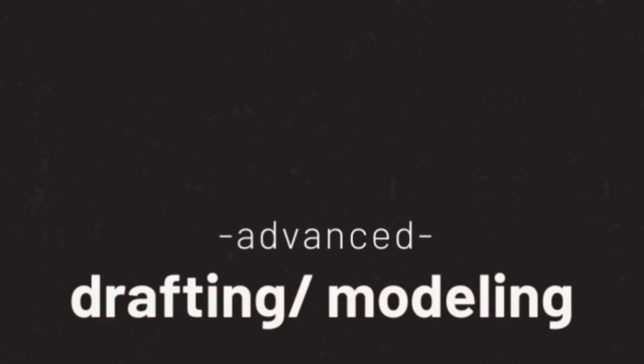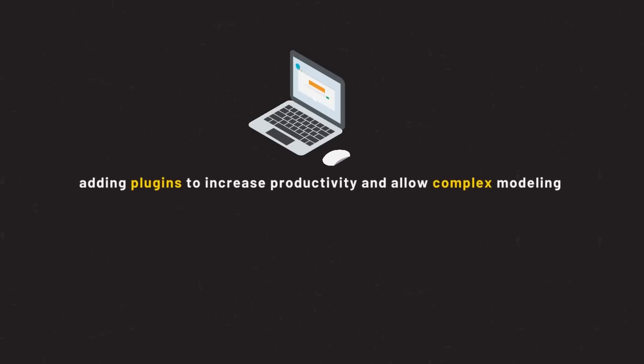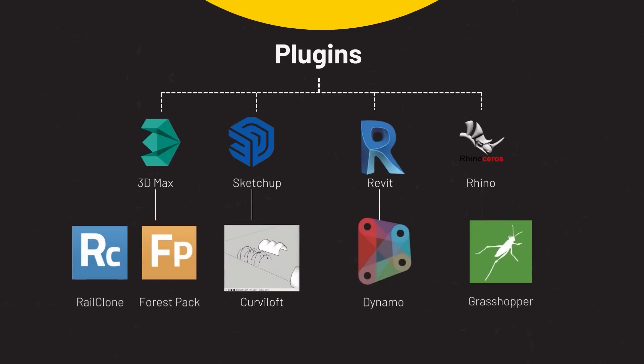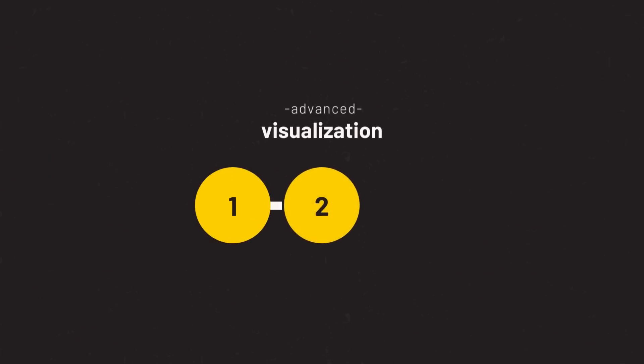Can you get better than this? Of course. For our first category, modeling, I would suggest adding plugins to make you more productive and allow you to model complex forms or model with data. Depending on your base modeling software, you'll need specific plugins — some examples are Grasshopper for Rhino, Rail Clone or Forest Pack for 3ds Max, Dynamo for Revit, and Curvy Loft or Quad Face Tools for SketchUp.